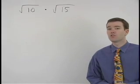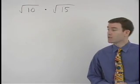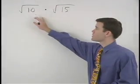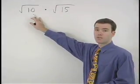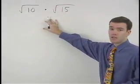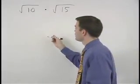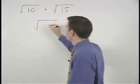To multiply two square roots together, simply multiply the numbers inside the square roots together. So root 10 times root 15 is root 150.